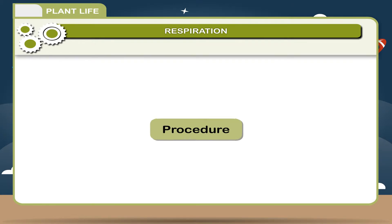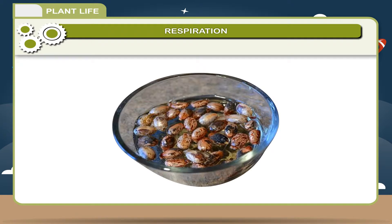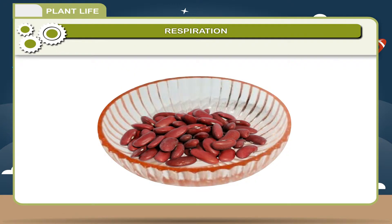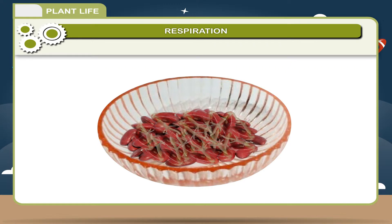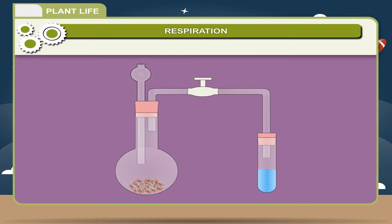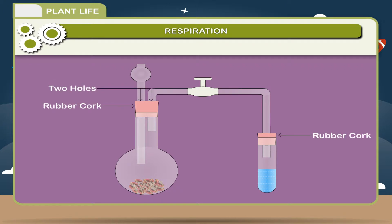Procedure: Collect some bean seeds and soak them for 10 to 15 hours. Drain off the water and allow them to germinate. Keep some germinating seeds in a flat bottom flask and seal it with a rubber cork having two holes. Introduce a thistle funnel through one hole and a twice-bent glass tube through the other.